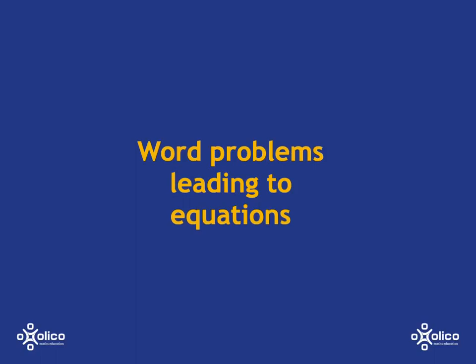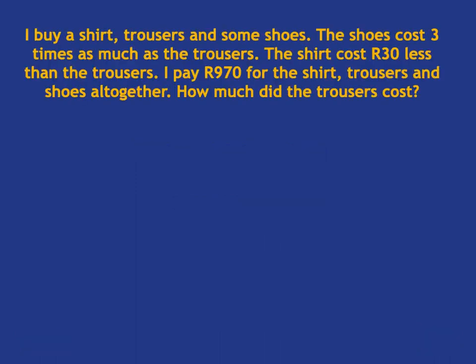We're going to have a look at an example of a word problem that leads to an equation and discuss how we might go about solving things like this. Here's the scenario: I buy a shirt, trousers and some shoes. The shoes cost three times as much as the trousers. The shirt costs 30 rand less than the trousers. I pay 970 rand for the shirt, trousers and shoes altogether. How much did the trousers cost?